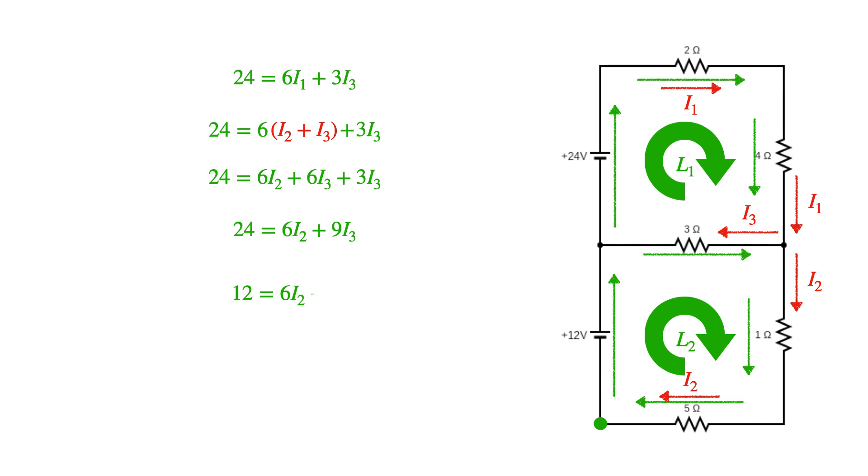Loop two, if you recall, began as a statement of I2 and I3. So now I have two equations, two unknowns.